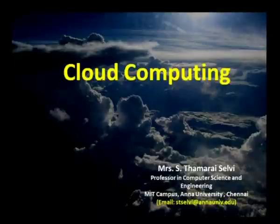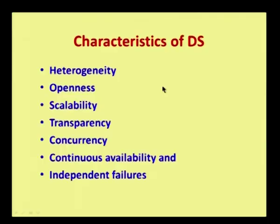Welcome back to the UGC lecture series on computer science on the topic of cloud computing. When you consider the characteristics of distributed systems, you have heterogeneity. It is not possible to dictate users to use only particular hardware or software. In a distributed system, one user may have Windows, another may have Mac, and another may have Unix — and even within Unix, you have different flavors such as Fedora, Scientific Linux, and others.